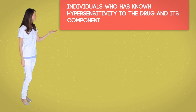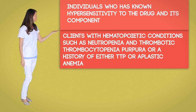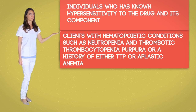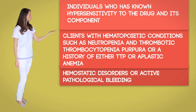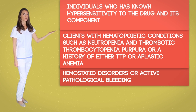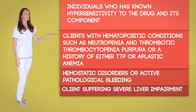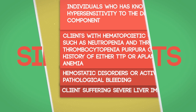Contraindications: Ticlid is contraindicated in individuals who have a known hypersensitivity to the drug, clients with hemopoietic conditions such as neutropenia, thrombocytopenia, or aplastic anemia, hemostatic disorders or active pathological bleeding such as bleeding peptic ulcer or intracranial bleeding, or clients suffering from liver impairment.